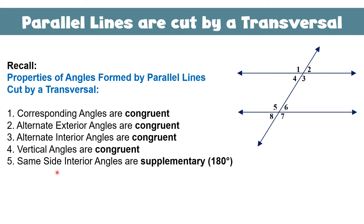The last property: same-side interior or exterior angles are supplementary. Same-side interior angle pairs are 3 and 6, and 4 and 5. For the exterior, we have 2 and 7, and 1 and 8. If you add the measurements of angle 3 and angle 6, their sum must equal 180 because they are supplementary.